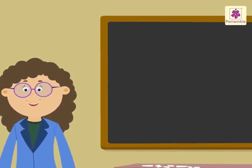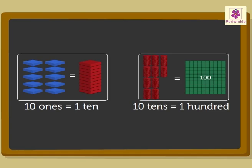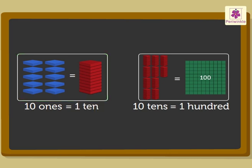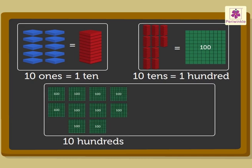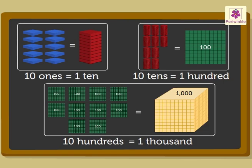We have already studied the relationship between ones, tens, and hundreds. We know that ten ones make one ten, and ten tens are equal to one hundred. Now, when we group ten hundreds together, we get one thousand.